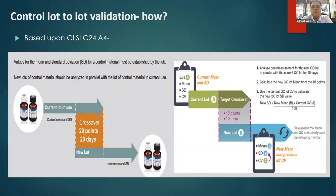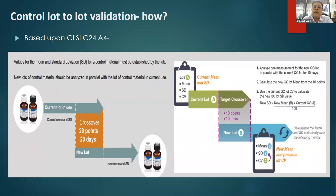There is a guideline document we can refer to: CLSI C24A4, which talks about how to go about control lot-to-lot validation. This document recommends that we need to have a crossover before our existing lot gets exhausted — we need the new lot to arrive and parallelly run the new lot of control simultaneously while the old lot is still available. The advantage is that by the time our old lot is exhausted, we would have established the mean and standard deviation of the new lot.